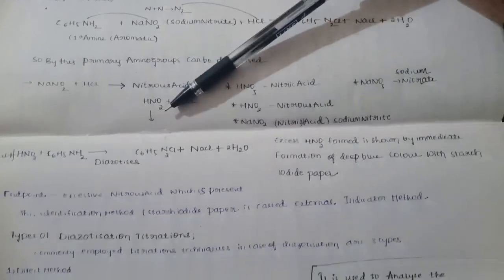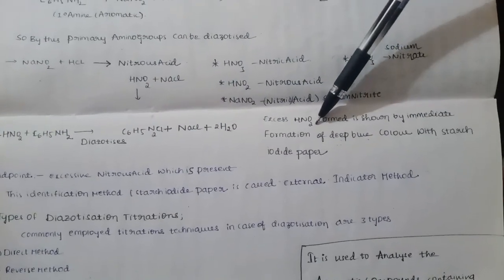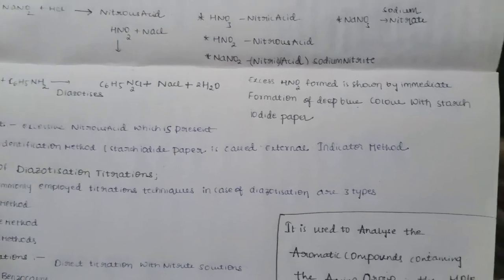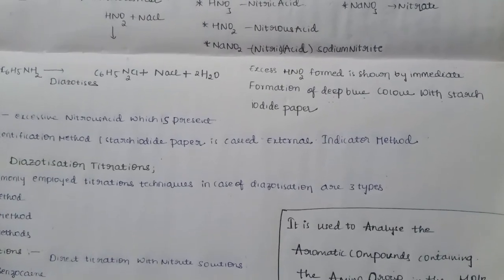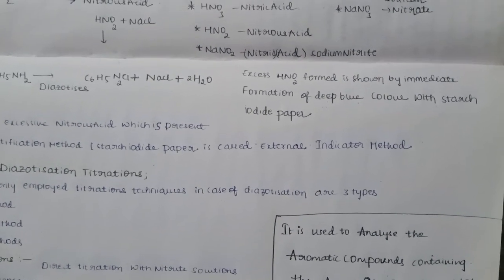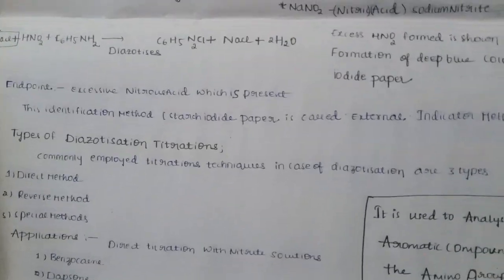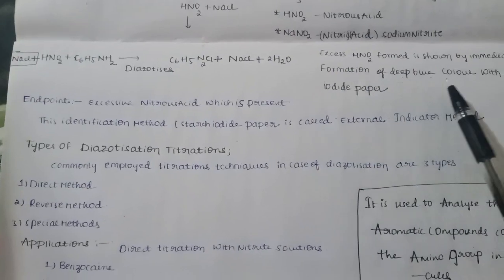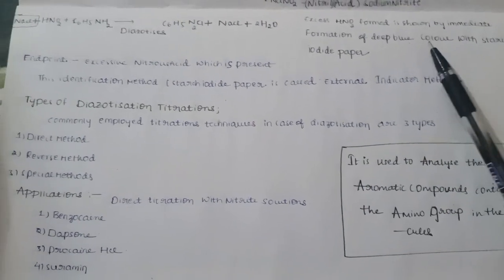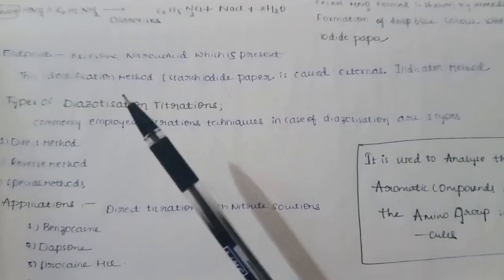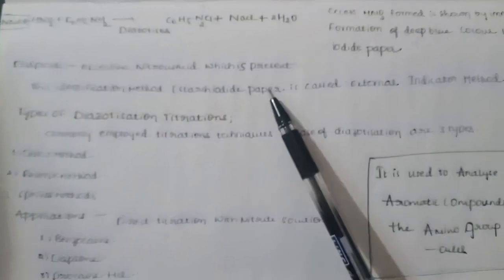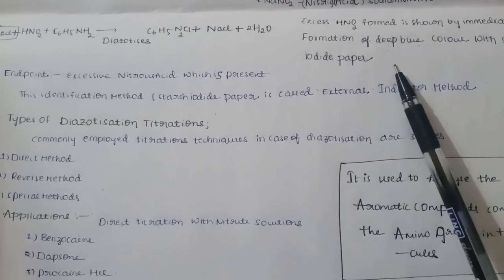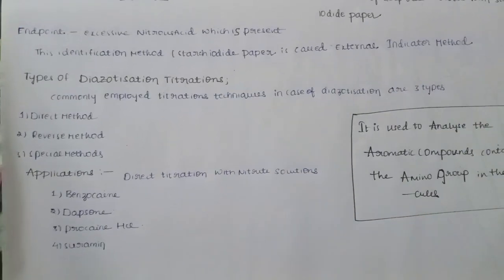The excess nitrous acid is identified by an external indicator method. We have to treat it with a starch iodide paper, and then it gets converted into deep blue color. By this we can know that there is complete reaction and the end point is observed. This is called the external indicator method.